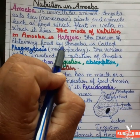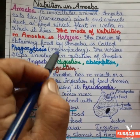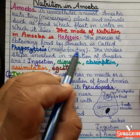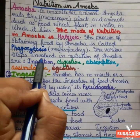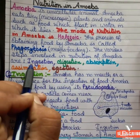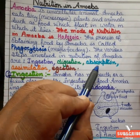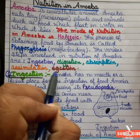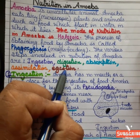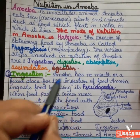The process of obtaining food by amoeba is called phagocytosis. Phagocytosis means feeding. The various steps involved in the nutrition of amoeba are: ingestion, digestion, absorption, assimilation, and egestion. Now we are going to discuss each of these steps one by one.